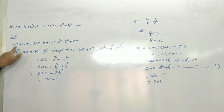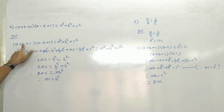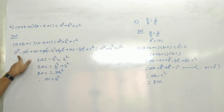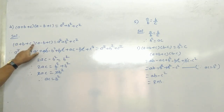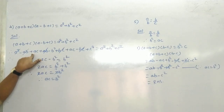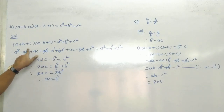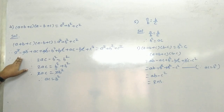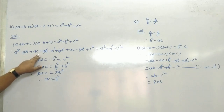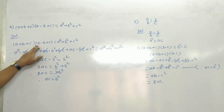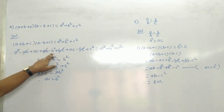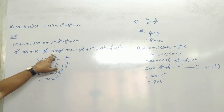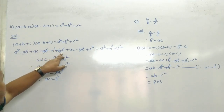A से पूरे bracket को multiply किया तो: A into A = A square, A into B = minus AB, A into C = plus AC. फिर B से: B into A = AB, B into minus B = minus B square, B into C = BC.